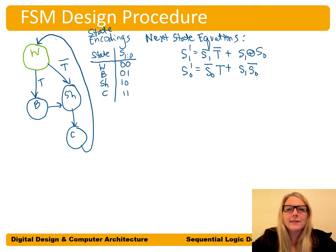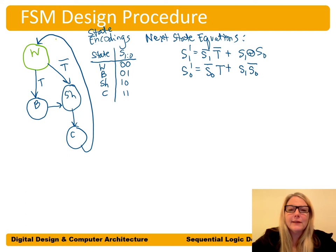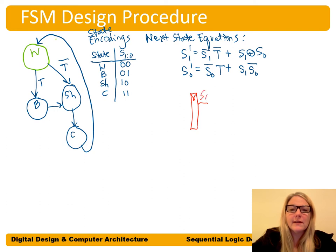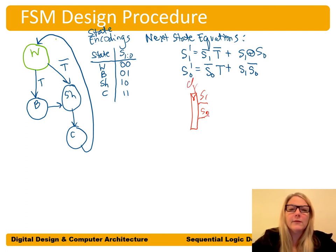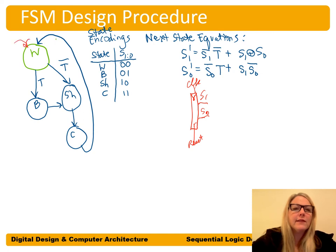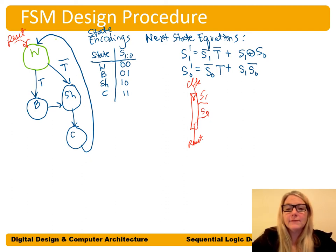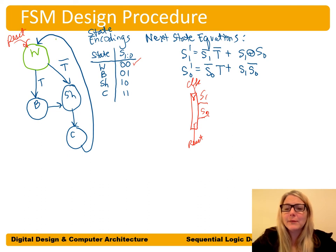Now that we have our next state equations for S1 prime and S0 prime, let's build the circuit. We start by putting in the state register — the register that holds our state bits. On the right, we have current state outputs S1 and S0. We always have a clock input and a reset input.